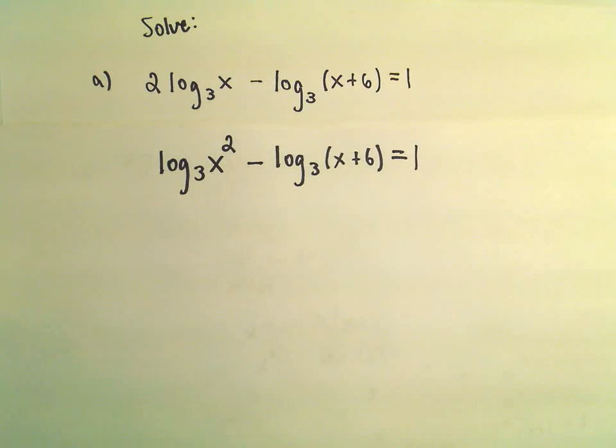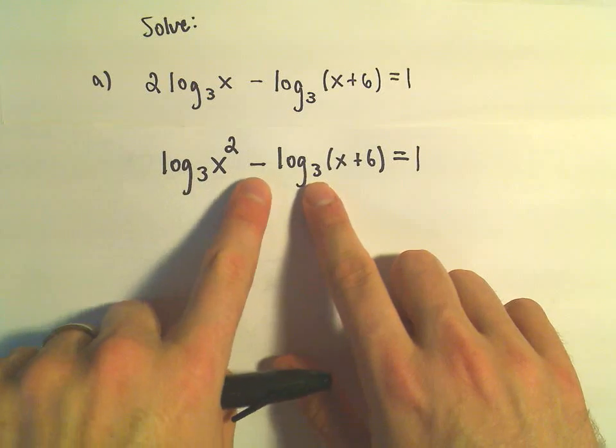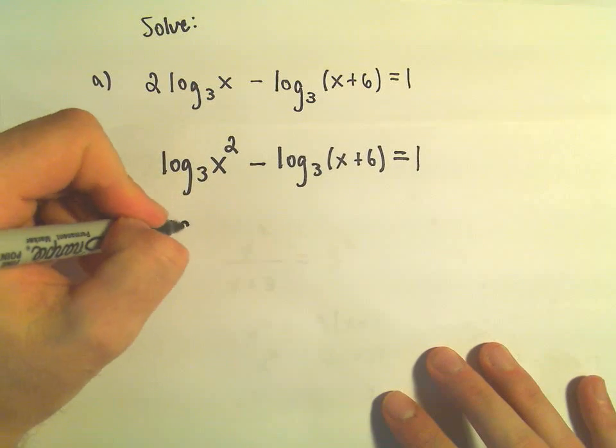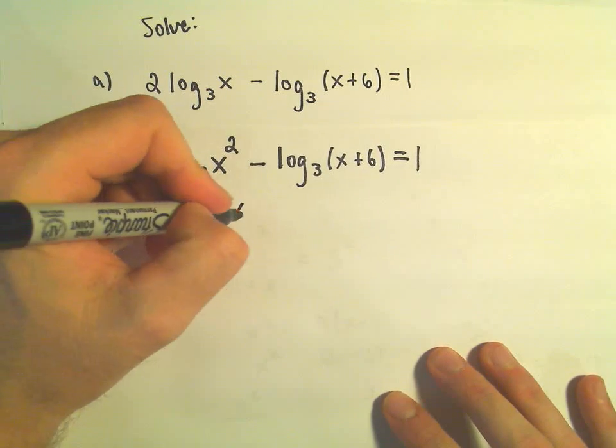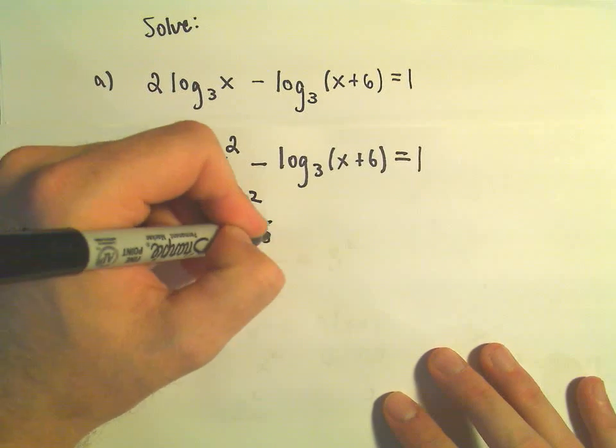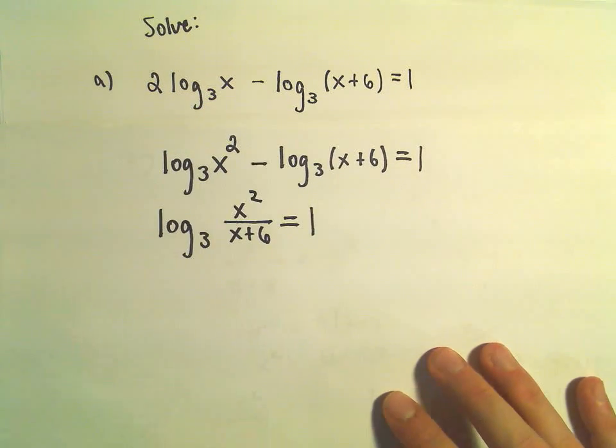But remember, if we have like bases, if we have subtraction, this becomes division. So we'll have log base 3 of x squared over x plus 6, that equals 1.